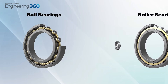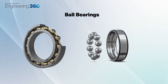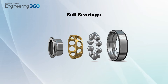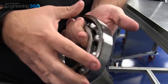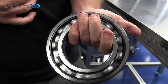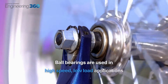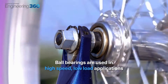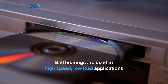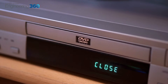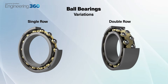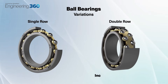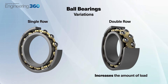Ball bearings consist of a row of hard metal balls trapped between two circular pieces of metal, known as races, and are secured by a retainer. The inner race is free to rotate, usually connected to an output shaft, while the outer race remains stationary. Ball bearings are commonly used in high-speed, low-load applications due to the small contact area of the balls to the casing. They come in both single and double row forms, with double row increasing the amount of load the ball bearing is able to withstand.